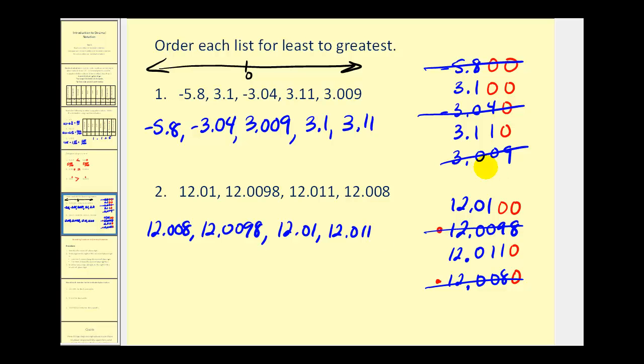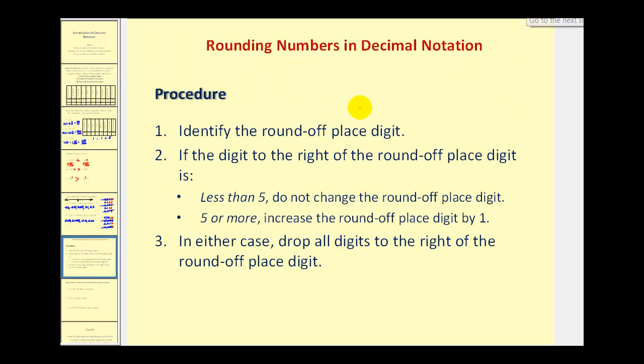Let's finish by talking about rounding. Rounding decimals is very similar to rounding whole numbers. Step one is to identify the round off digit. Step two, if the digit to the right of the round off place digit is less than five, we round down, so we do not change the round off digit. If it's five or more, we round up by increasing the round off digit by one. In either case, we drop all digits to the right of the round off place digit.